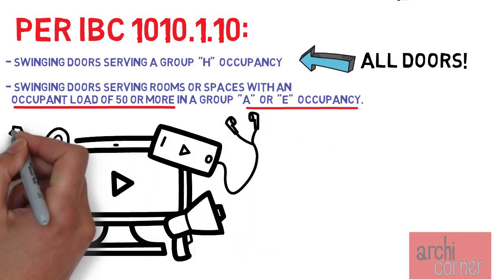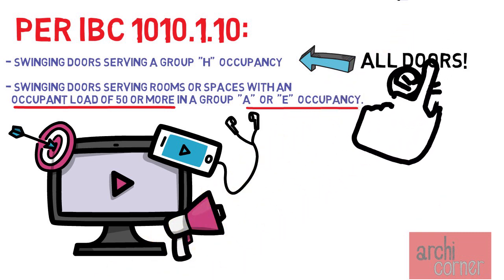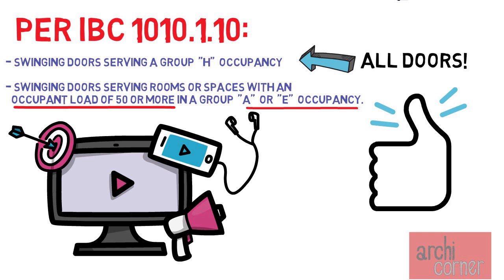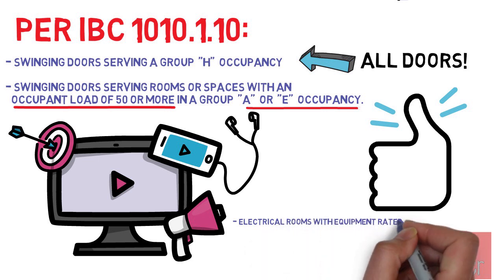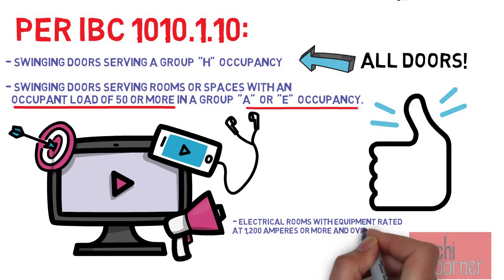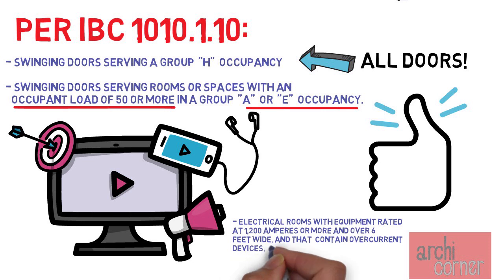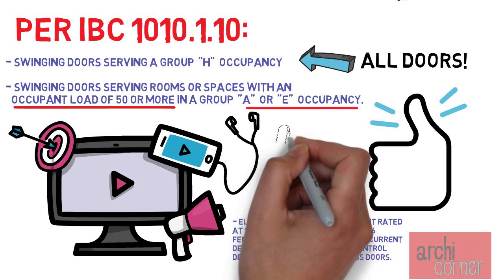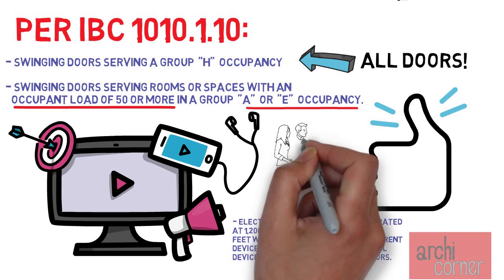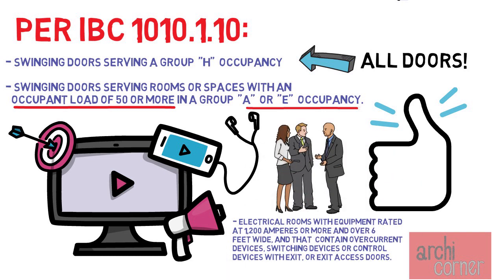If you don't know much about occupancy groups, I have made a video you can view for more general details. Besides occupancy group, this section also states that panic hardware is required in electrical rooms with equipment rated at 1200 amperes or more and over six feet wide, that contain overcurrent devices, switching devices, or control devices, with exit or exit access doors. Unless you're an electrical engineer you may not know if the equipment meets this criteria, so ask your electrical engineer.